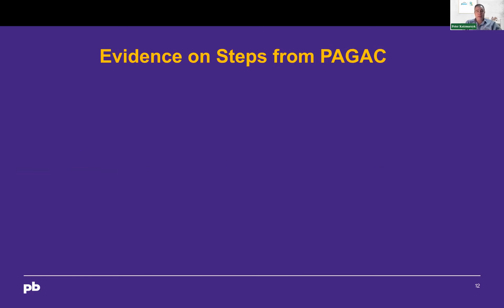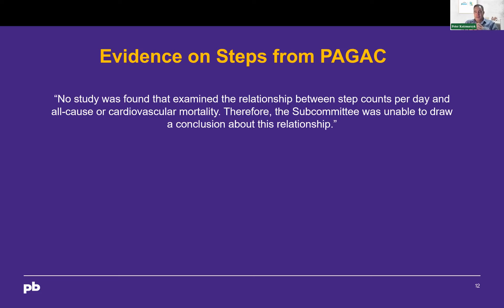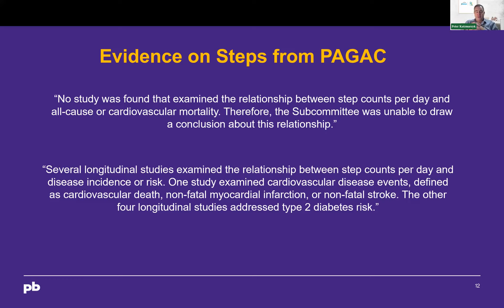There was limited evidence suggesting that step counts were associated with incident CVD and type 2 diabetes. At that time — 2017 and earlier — there were no studies found that examined the association between step counts per day and mortality, so we were unable to reach any conclusion on that question. Today we see these studies coming out, but not back in 2016–2017. They found five longitudinal studies looking at step counts per day and disease incidence: one for CVD and four for diabetes. That was essentially the entire evidence base at that time.